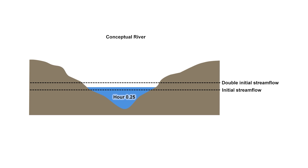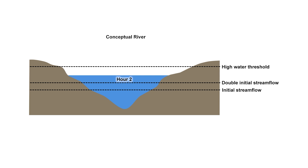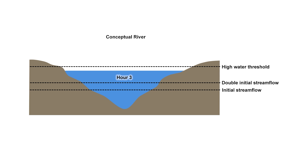First, the forecast stream flow must double or more within an hour. And second, it must exceed a high water threshold within six hours of the initial stream flow doubling.